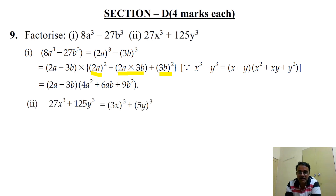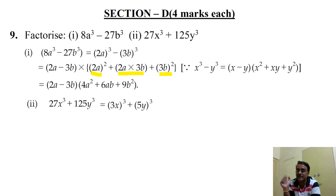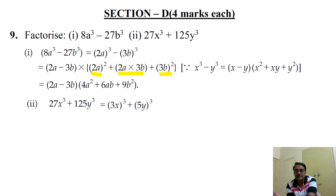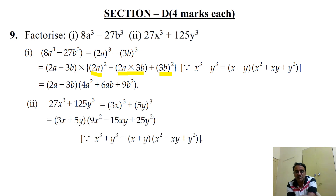Second part: factorize 27x³ + 125y³. Here 27x³ = (3x)³ and 125y³ = (5y)³. Using x³ + y³ = (x + y)(x² - xy + y²), we get (3x + 5y)(9x² - 15xy + 25y²).